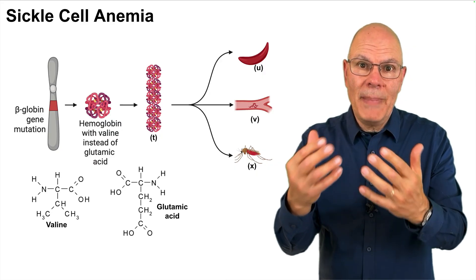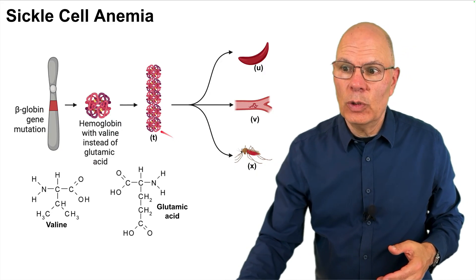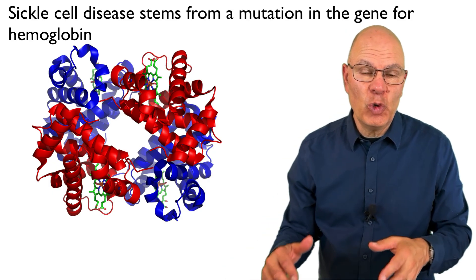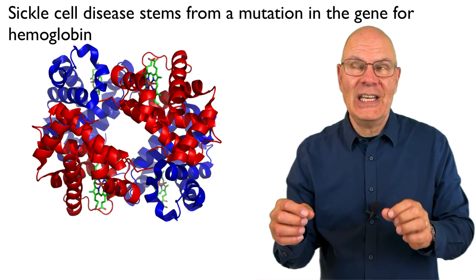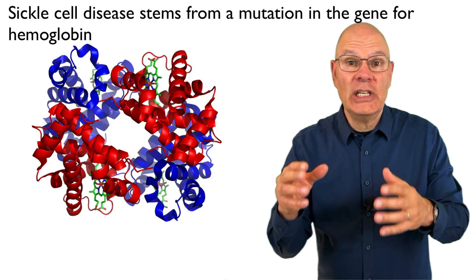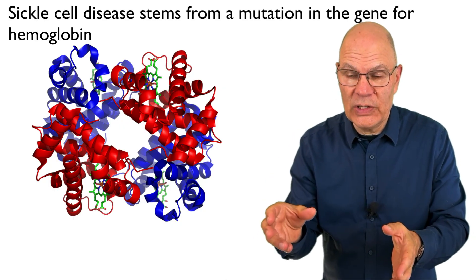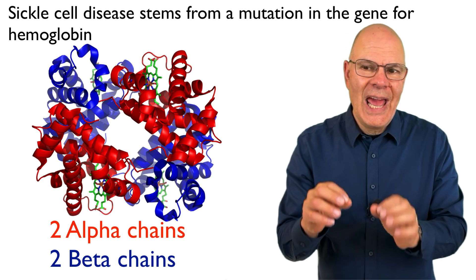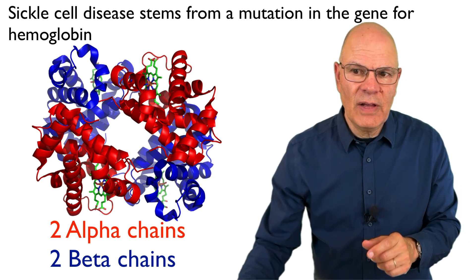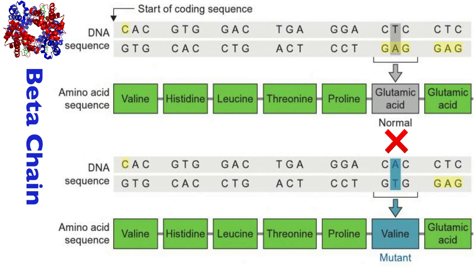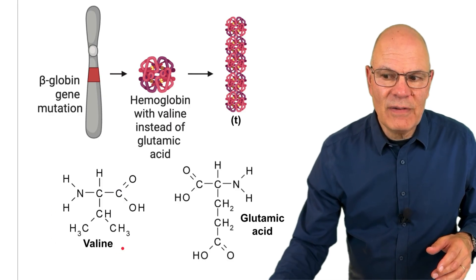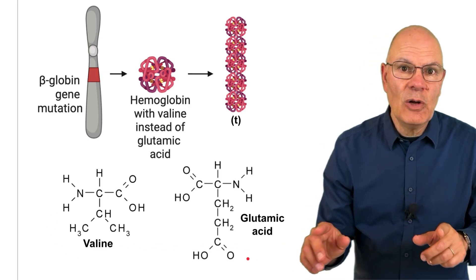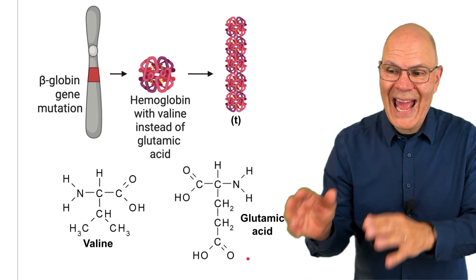How does sickle cell anemia work? It's all based around the molecule hemoglobin. Hemoglobin is a quaternary protein, and it carries oxygen in our red blood cells. It consists of two alpha chains and two beta chains, and the mutation involves a single point mutation in the beta chain.